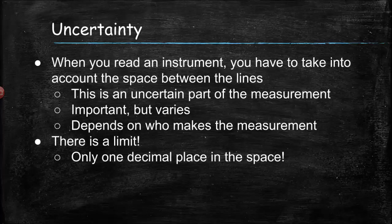When you read an instrument, you have to take into account the space between the lines. That means if your measurement falls between two lines actually drawn on the instrument, you're going to have to estimate — this is the uncertain part of the measurement. You may look at it and say it's 0.5; somebody else might say 0.7. You're both right.